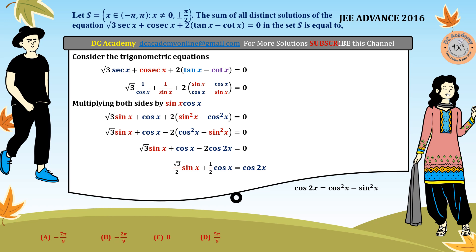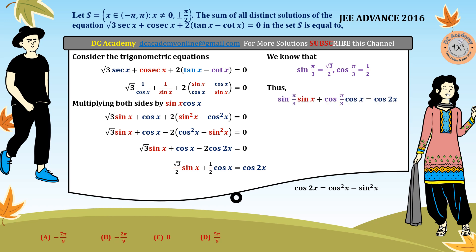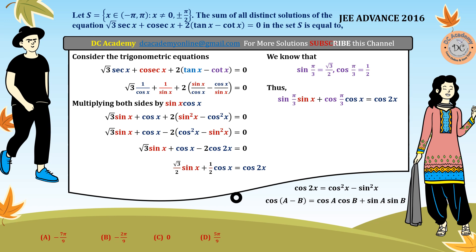We divide by 2 because sine of pi by 3 equals root 3 by 2 and cos of pi by 3 equals 1 by 2 — that is sin 60 and cos 60 respectively. Substituting these values, root 3 by 2 becomes sine pi by 3 and 1 by 2 becomes cos pi by 3. Recalling the formula cos(A minus B) equals cos A cos B plus sine A sine B, and setting A equal to pi by 3 and B equal to x, the left-hand side becomes cos(pi by 3 minus x).